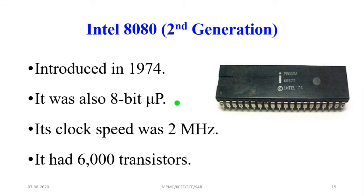The Intel 8080 is a second generation microprocessor, introduced in 1974. It supports 8-bit data with a clock speed of 2 MHz. As each generation develops, the clock speed increases, meaning the processor speed also increases. This processor contains 6,000 transistors inside the single chip.